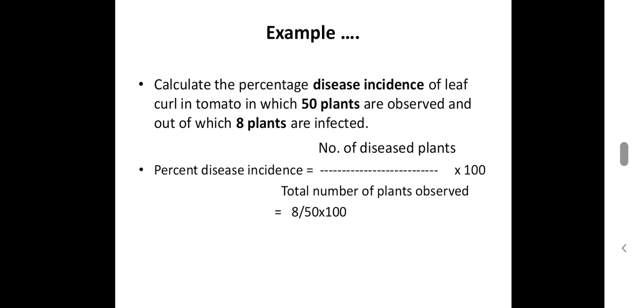Here is the example. That is, we have to calculate the percent disease incidence of leaf curl in tomato in which 50 plants are observed and out of which 8 plants are infected. So, put out the values in the formulae and then calculate and please mention the answer in the comment box.